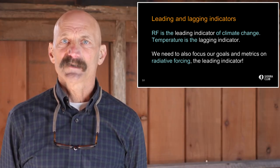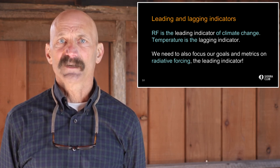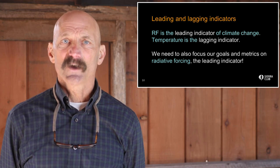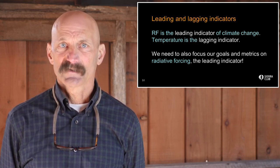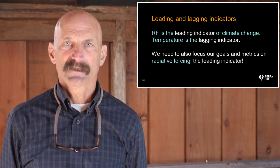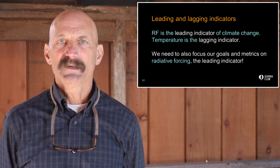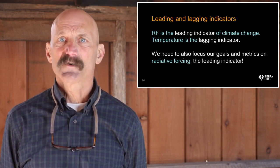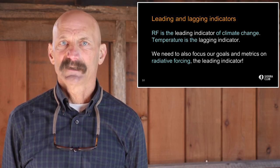At COP21 in Paris in 2015, the parties reaffirmed their ambition to keep the global average temperature below 2 degrees centigrade, and to strive to limit the increase to 1.5 degrees centigrade. But setting a target based on a lagging indicator means that our response to climate instability will always be decades too late. We need to also focus our goals and metrics on radiative forcing — the leading indicator.